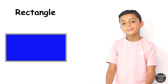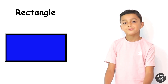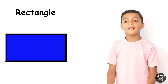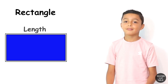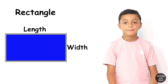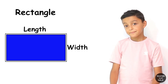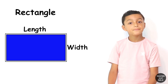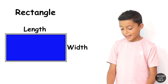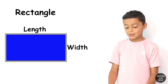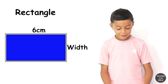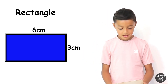Do you know what the longer side of a rectangle is called? The length. Good, and the shorter side? The width. So let's look at the first rectangle that you've got there. What's the length of that rectangle? The length of it is 6 centimetres. And the width? 3 centimetres.